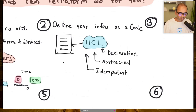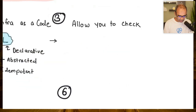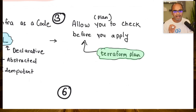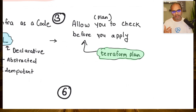That common interface is HCL — HashiCorp Configuration Language — a declarative, abstracted, idempotent language. You define what you want rather than writing scripts for how to achieve it. Terraform also has a key feature called terraform plan — you can check before you apply. It looks at the configuration, queries the cloud status, compares them, and tells you exactly what it's going to create, update, or delete.